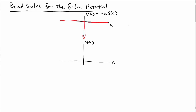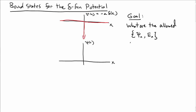Let's investigate how we find bound states for this rather unnatural-looking delta function-like potential. Our goal in trying to find bound states is we're looking for the wave functions that are allowed — the allowed psi sub n and the allowed E sub n energies for this potential. In particular, we're looking for the energy eigenstates of the delta function potential.